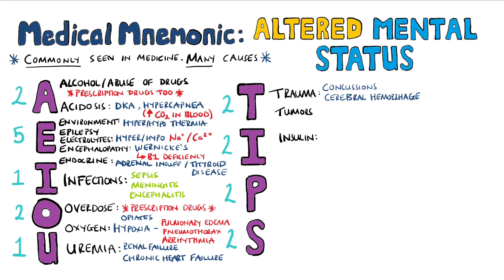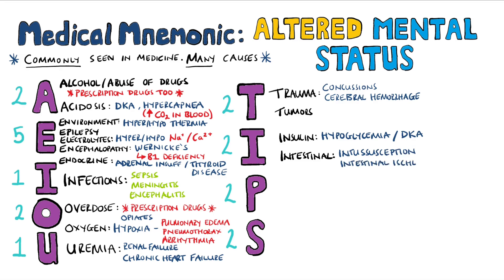I reminds us of insulin. If you take too much, you can end up hypoglycemic. If you don't take enough, you might end up in diabetic ketoacidosis, as we mentioned earlier. We also have intestinal causes under I, including intussusception and intestinal ischemia.